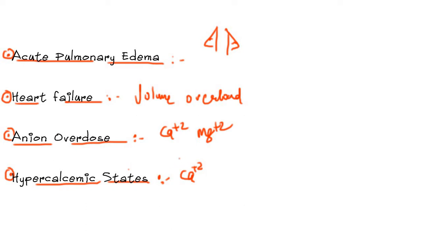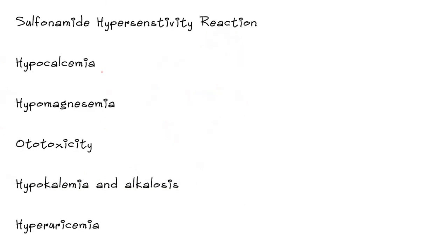Now let's cover the potential side effects of loop diuretics. The first is sulfonamide hypersensitivity reaction. As mentioned in videos on carbonic anhydrase inhibitors, drugs which contain sulfur may cause hypersensitivity reactions in certain genetically predisposed individuals, and loop diuretics are among the drugs that can cause this reaction. The next side effect is hypocalcemia, resulting from the excretion of calcium caused by loop diuretics.